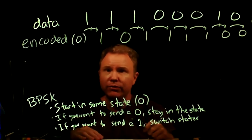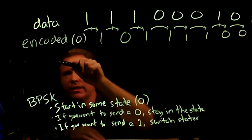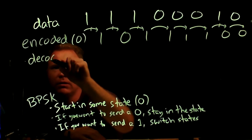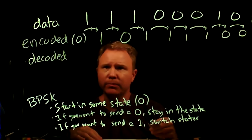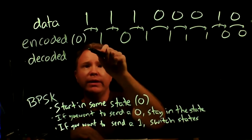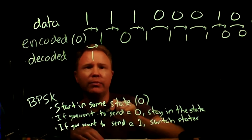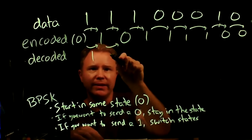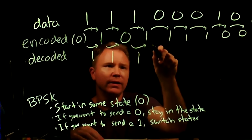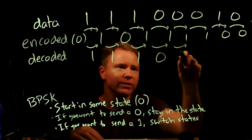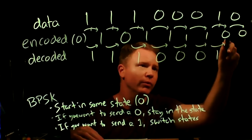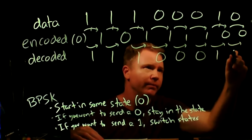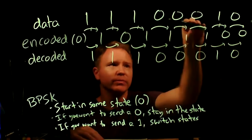Now I receive this signal, or possibly a flipped version. If I receive exactly what was transmitted, here's the decoding process: I look at two adjacent bits and ask, did they flip? Yes — output a one. Yes, flipped from one to zero — output a one. Yes — output a one. No — output a zero. No — output a zero. No — output a zero. Yes, went from one to zero — output a one. No — output a zero. The decoded version matches my original input sequence.